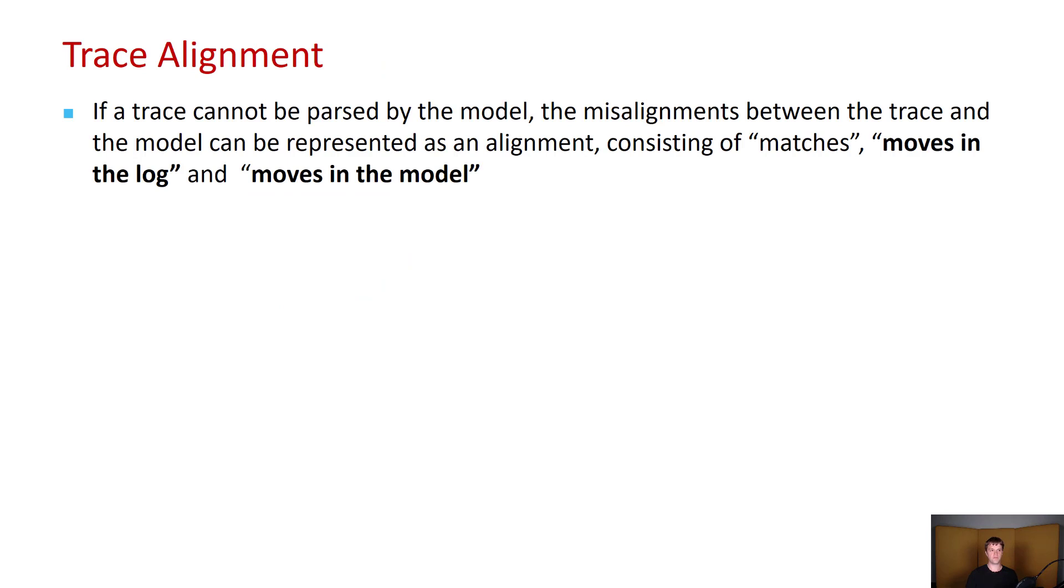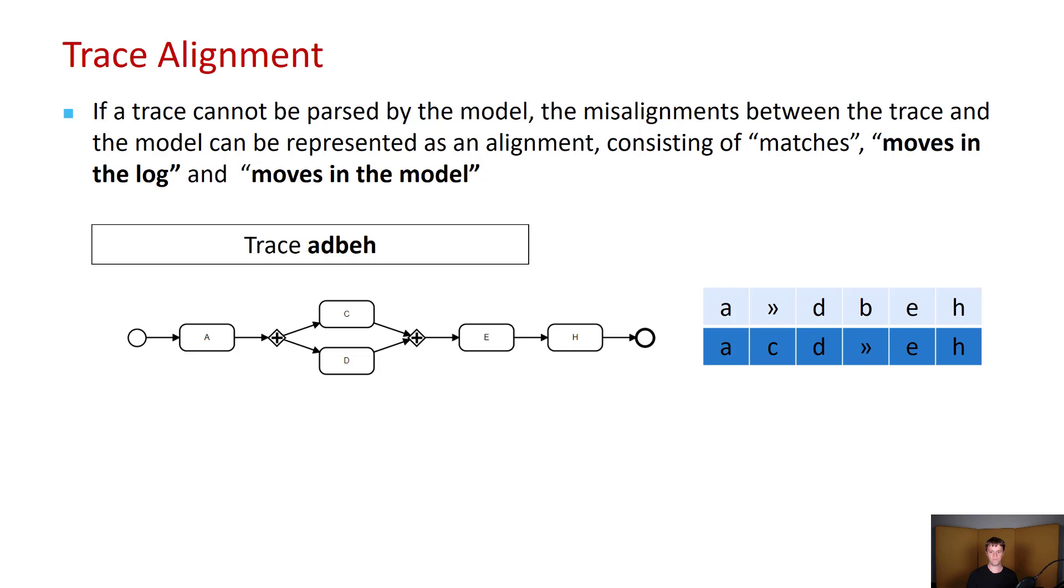Another log to model replay approach is trace alignments. Here the basic idea is that if a trace cannot be parsed by the model, the misalignments between the trace and the model can be represented as an alignment, consisting of matches, moves in the log, and moves in the model. Let's take a look at another example, where we have quite a simple trace and also a simple process model. So here we have the alignment where the top row corresponds to the trace and the bottom row corresponds to a path in the model, also called the adjusted trace.